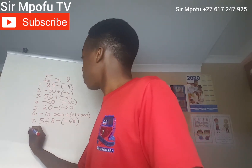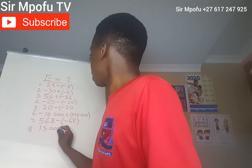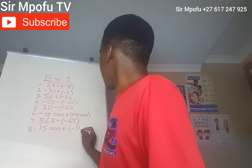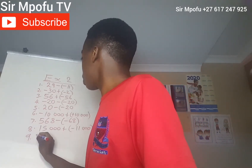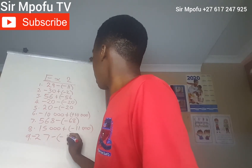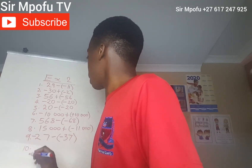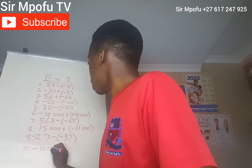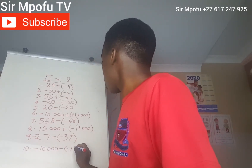Number 8: 15,000 plus negative 11,000. Number 9: minus 27 minus minus 37. Number 10: minus 10,000 minus minus 1,000.